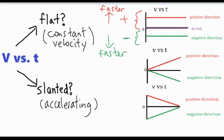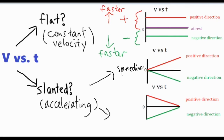Now let's take a look at the slanted graphs, which show accelerated motion. We have two types of motion to break down: one is speeding up, and the other is slowing down.